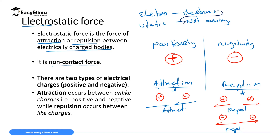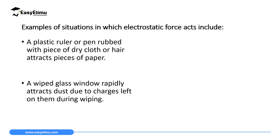The reason why opposite charges attract and like charges repel will be discussed in a later topic, so stay tuned. Some situations where electrostatic force acts include a plastic ruler or pen rubbed with a piece of black cloth, which can attract small pieces of paper. These pieces of paper are neutral — they have equal numbers of positive and negative charges.